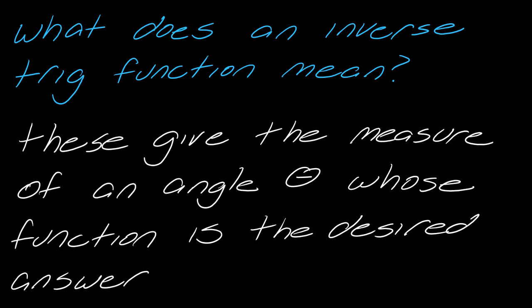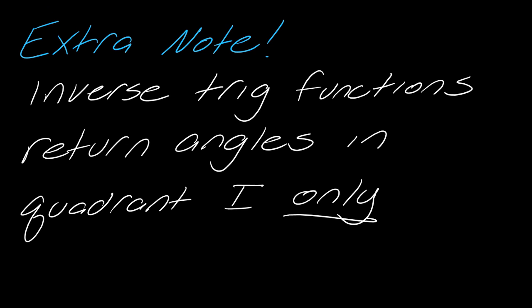And so, just to make it clear what this means. So, these functions give the measure of an angle theta whose function is that desired value or answer. And just an extra note. Inverse trig functions return angles in quadrant 1 only. So, they're going to always be between 0 and 90 degrees.